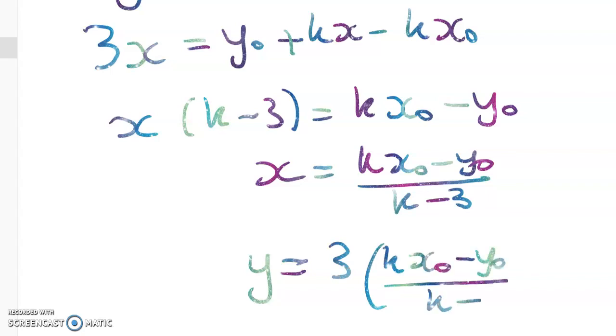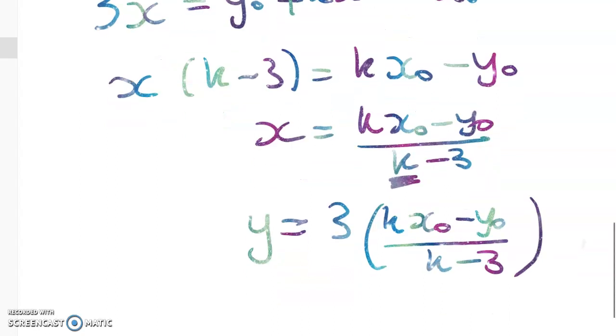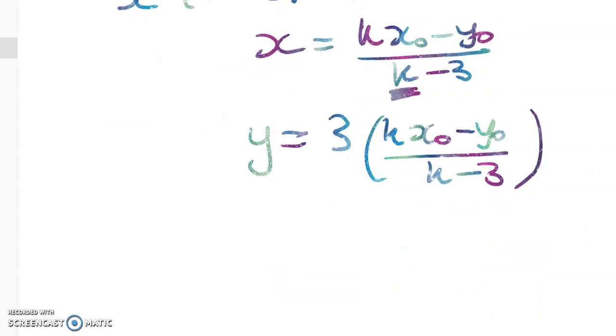So that actually wasn't so bad, as long as we got the idea that we can just think of the slope as being a constant that's k. So point C is equal to this.